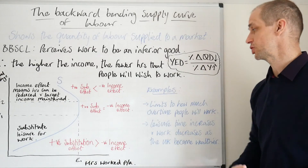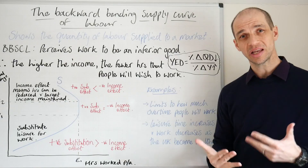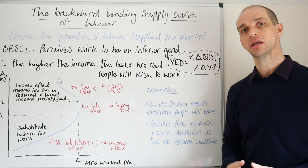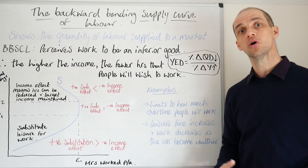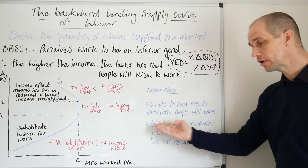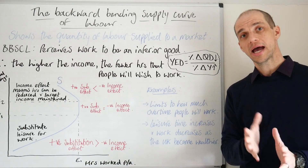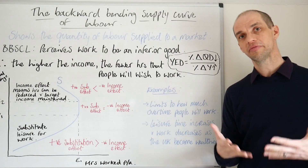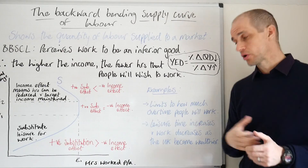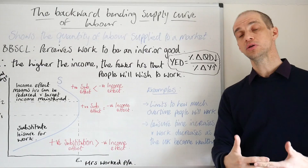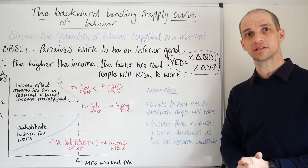There are a number of good examples of where we see this in action. For instance, there are limits to how much overtime people will want to work. You see big incentives in some lines of work — perhaps waitering or waitressing on Christmas Day — but even then there will be limitations to how much work people actually want to take on. Further to this, our leisure time has actually increased across the Western world, not just in the UK, as living standards have risen. We've opted to switch away from working more hours in favour of more leisure time. We can expect something like that to happen in the future as China gets richer as well. That's the backwards-bending supply curve of labour. Thanks, guys.